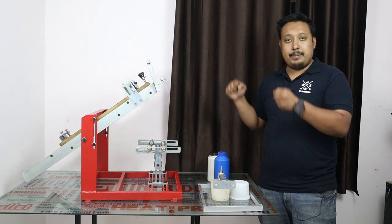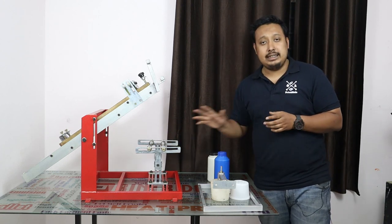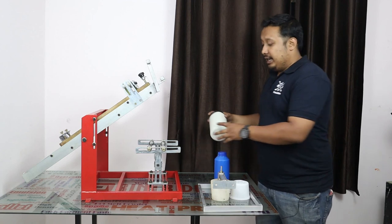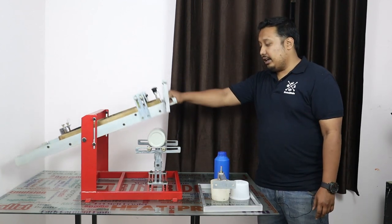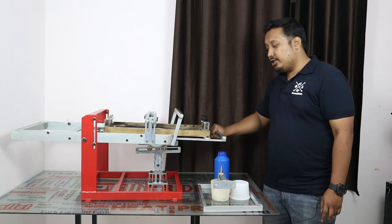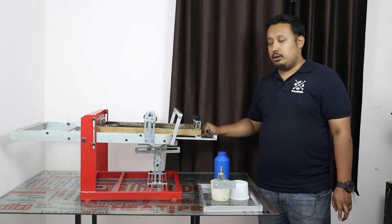There are four bearings where you can put your cylindrical bottle, roll it here, and you can pull the squeegee so that you can do your print.